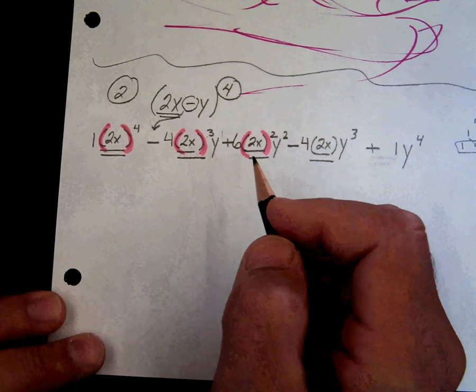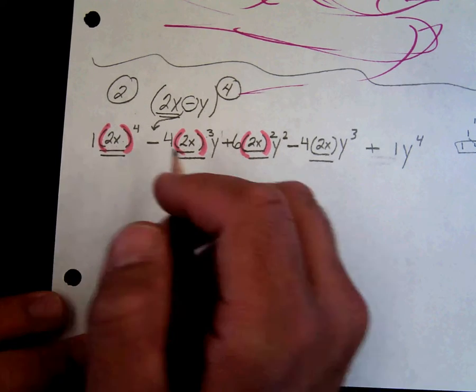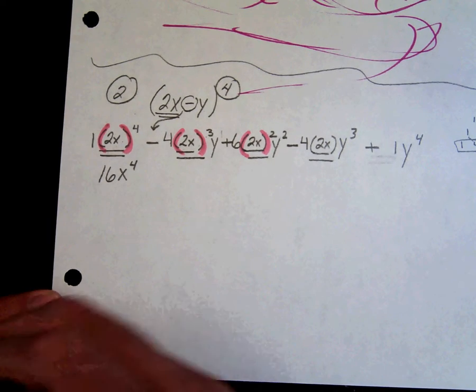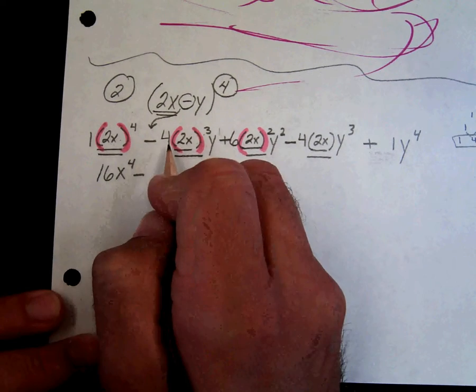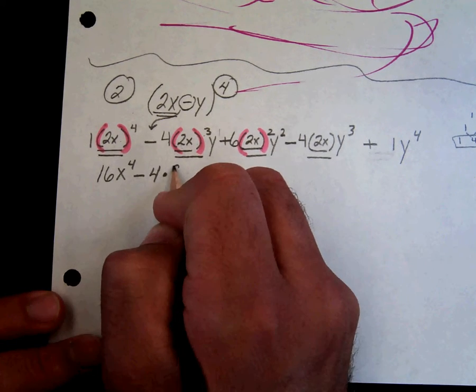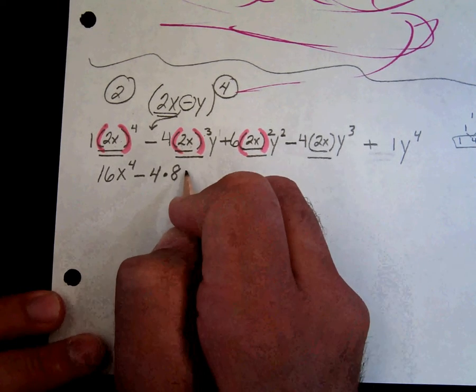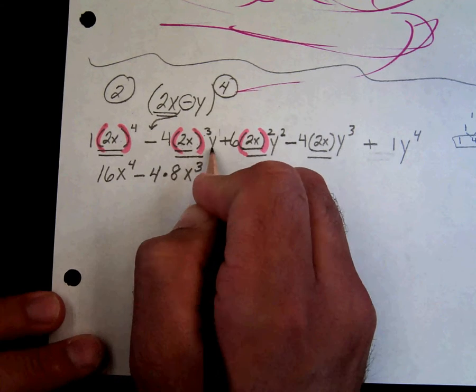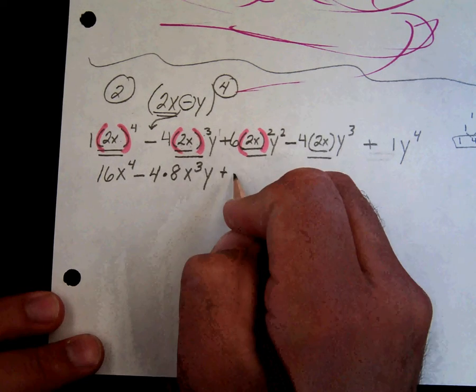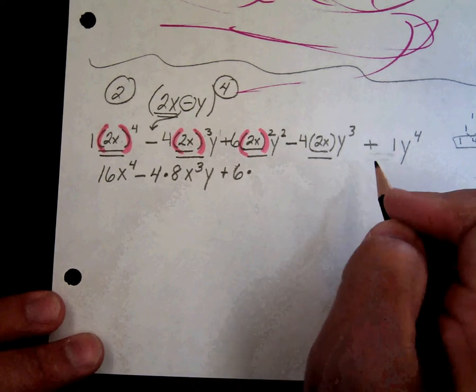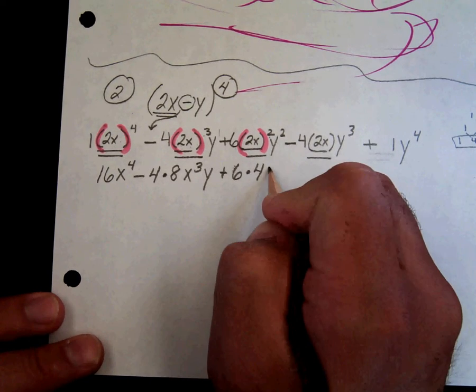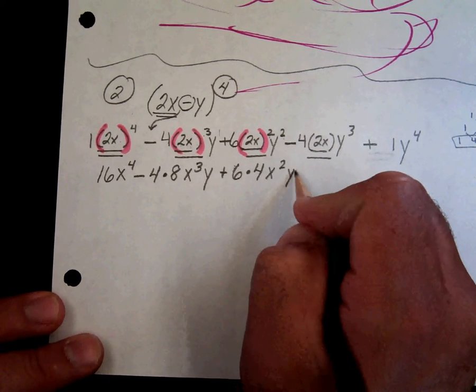2x to the fourth is 2 to the fourth, x to the fourth, minus. I'm going to leave this four here for a minute. 2 cubed is 8. x cubed is x cubed. y has a 1 as an exponent, so it's just y. Plus, see that's 6? Hold on to it for a minute. 2 squared is 4. x squared is x squared. y squared is y squared.